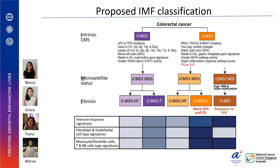Due to time limitations, I can only share a summary of the biological features of these two subtypes. We found that most ICMS-2 cells are enriched for APC and TP53 mutations, enriched for CNV, mainly left colon, related to adenomatous polyp gene signatures, and have greater WNT and MYC activity. On the other hand, ICMS-3 are enriched for KRAS, PIK3CA, and BRAF mutations. They are mostly diploid, mainly right colon, related to serrated polyps and gastric metaplasia gene signatures, have greater MAPK pathway activity, higher inflammation response pathway scores, and also have the worst survival rates.